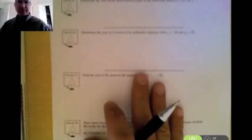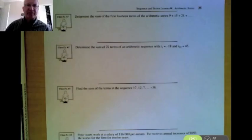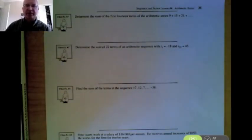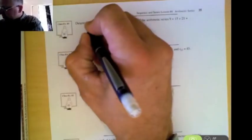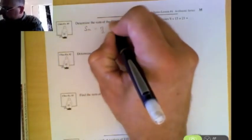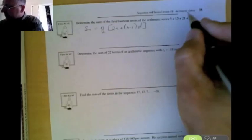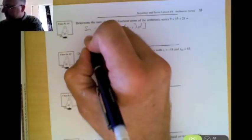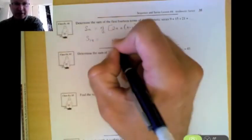We're going to actually use these formulas to try and come up with a solution to some problems. This first problem says determine the sum of the first 14 terms of this particular series. We're going to write out our formula: S of n equals n over 2 times 2a plus n minus 1d. So it says we're going to find the sum of the first 14 terms.